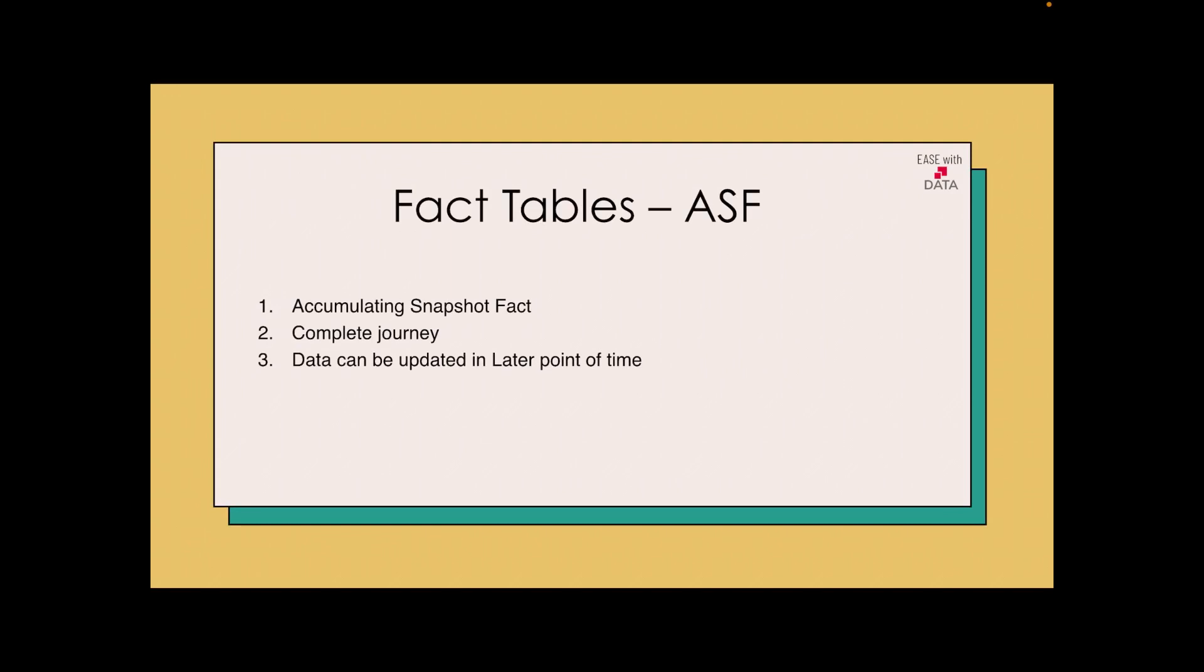To start with accumulating snapshot fact, it is basically a fact where the data gets updated over the period of time. It usually shows the complete journey of the data. Data are updated or overwritten over the period of time.